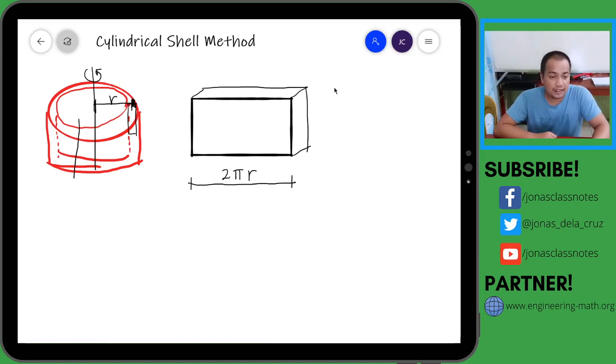Okay, the height, of course, of this block is the height of the rectangular element. So this is, sabi natin, L.